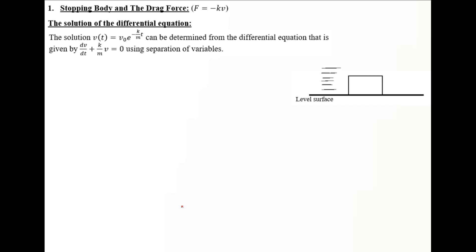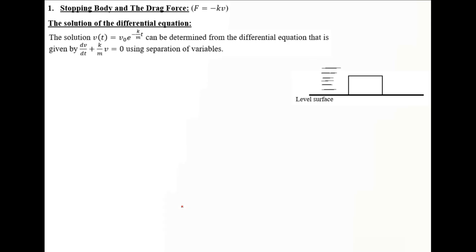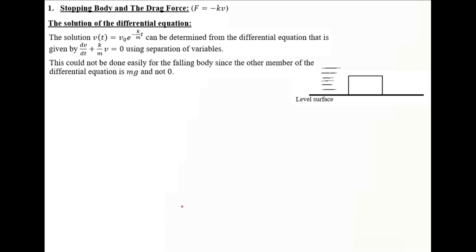The solution can be determined from the differential equation dV/dt plus K/M times V equals 0 using separation of variables. In analogy with the previous video, we hadn't done the solution using separation of variables there because the other member was mg and not 0, making it more challenging. So we will do it here to master the concept, and later in past papers we will solve the case where the other member is mg.